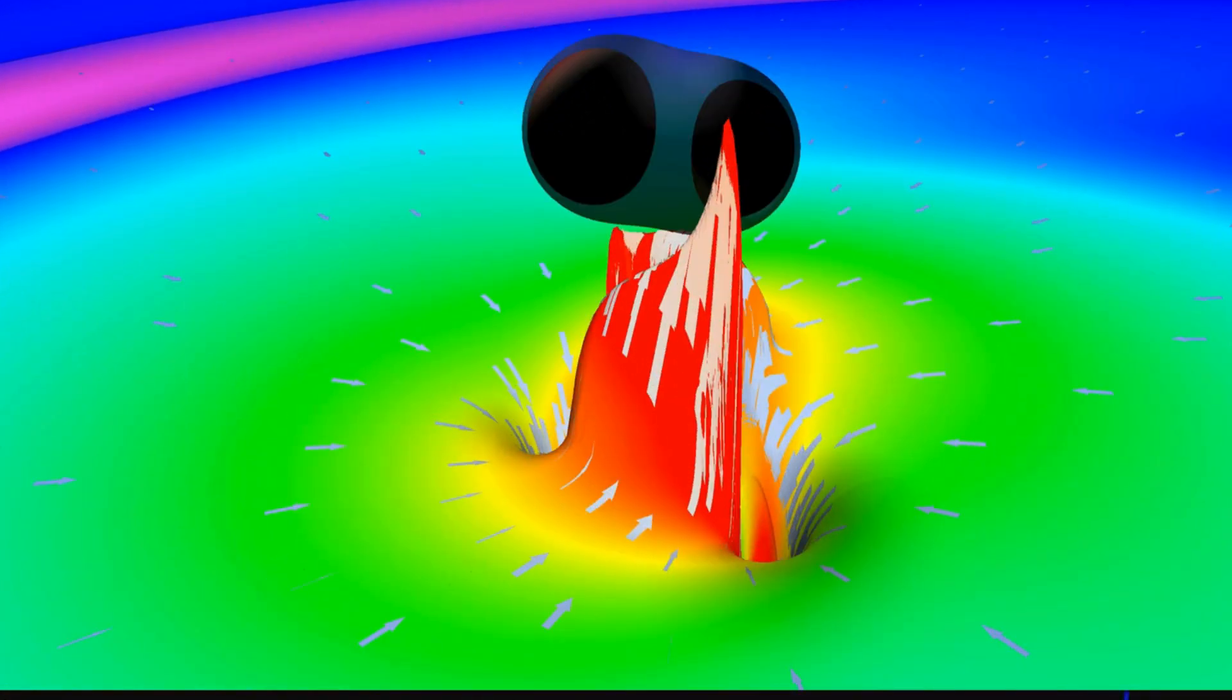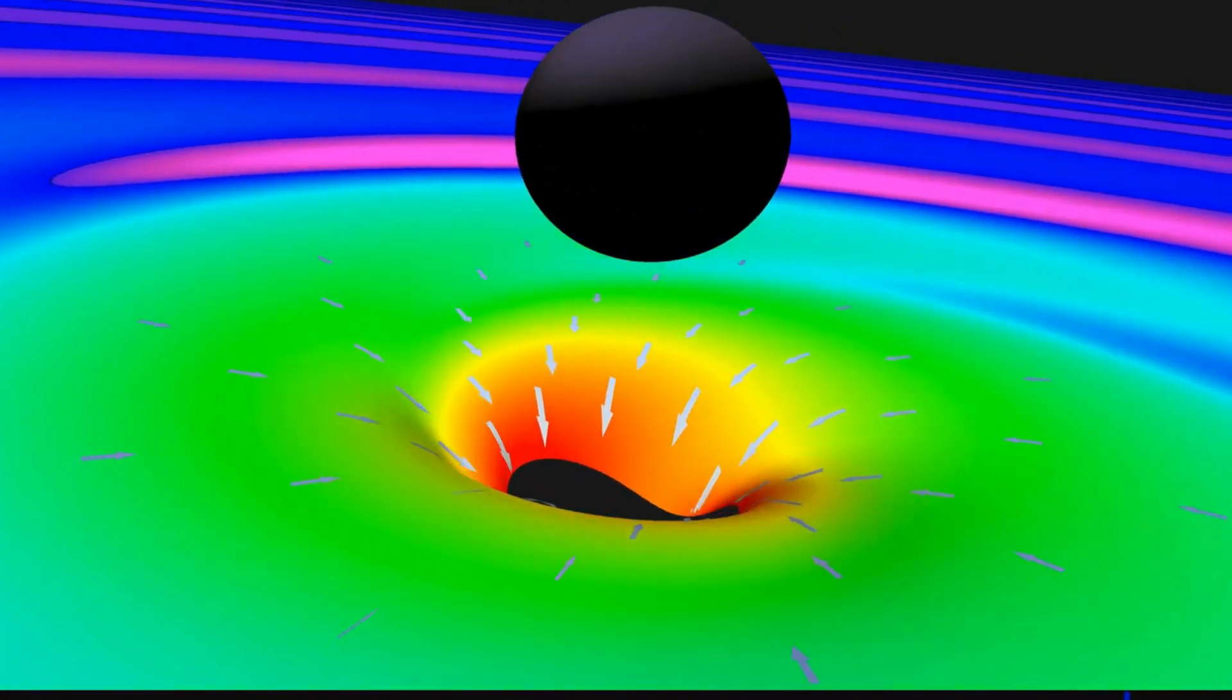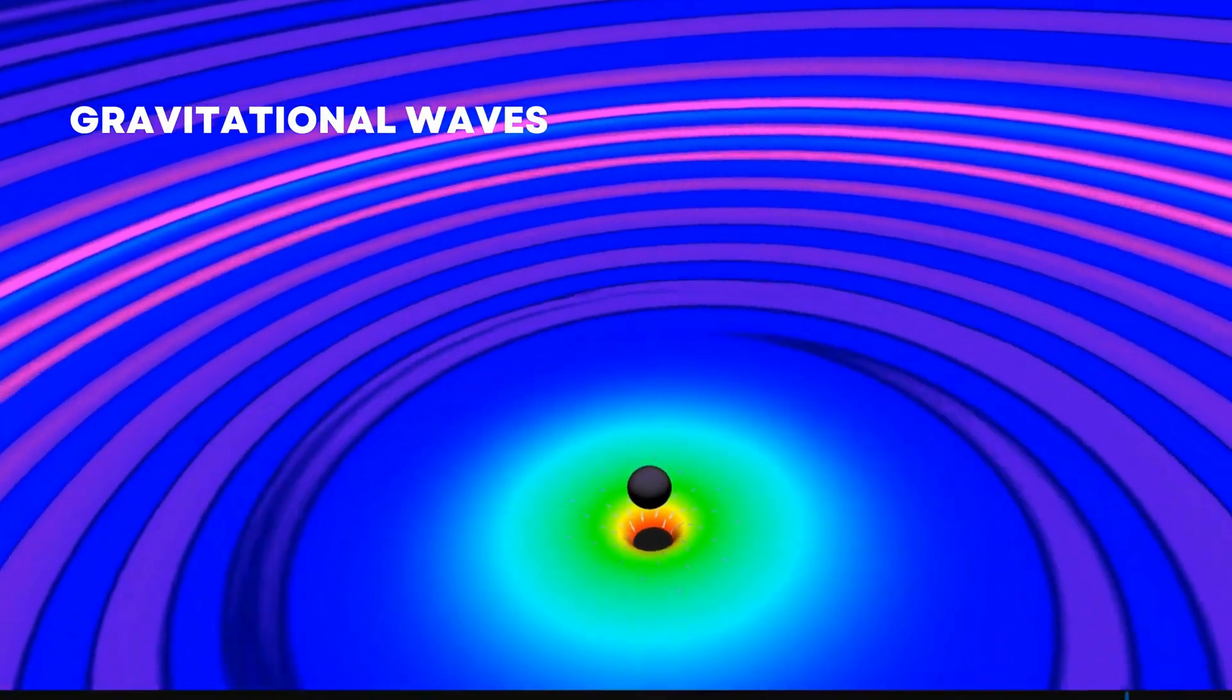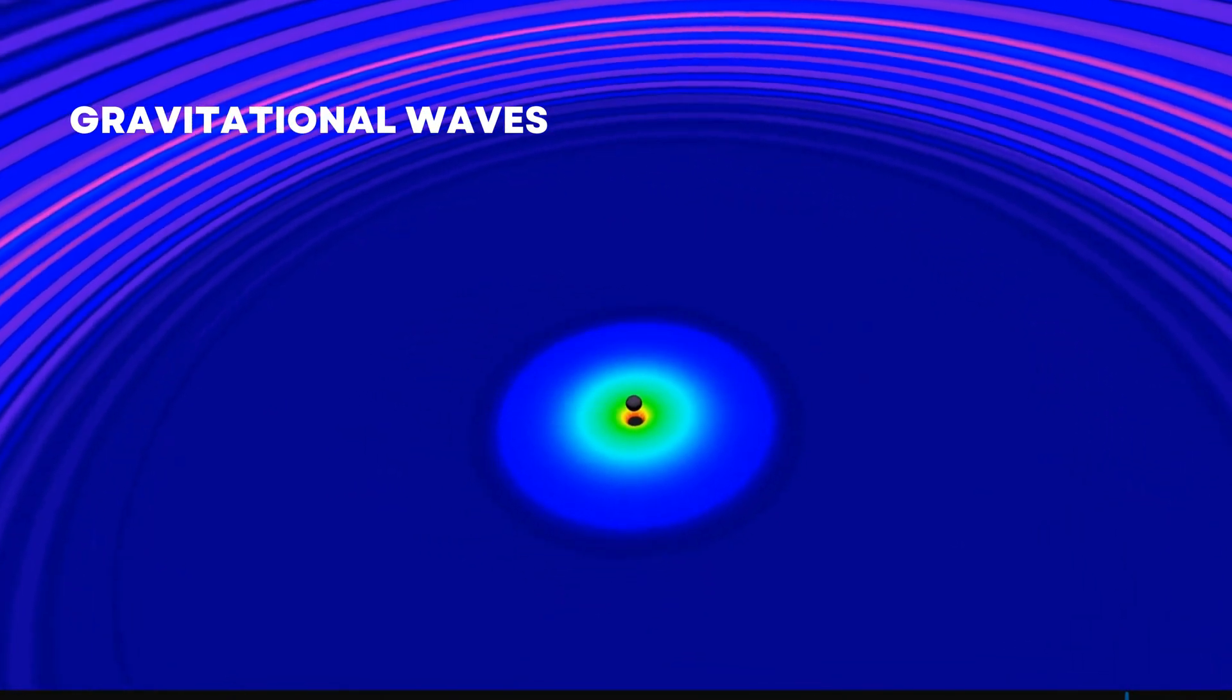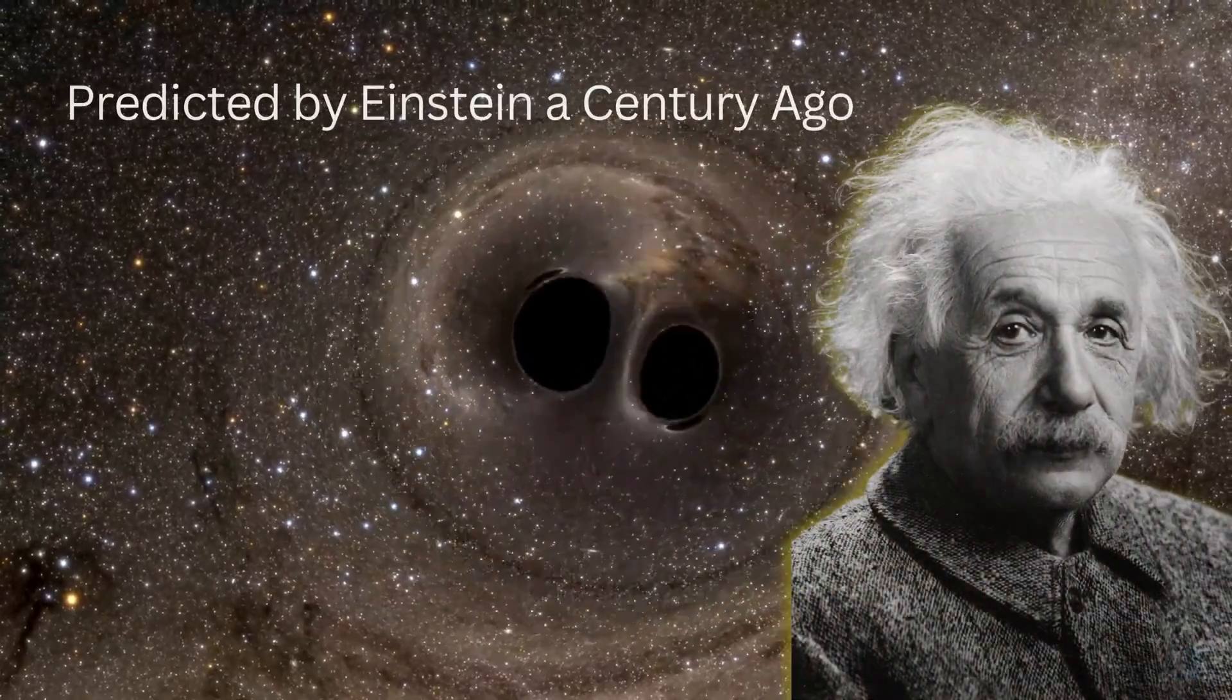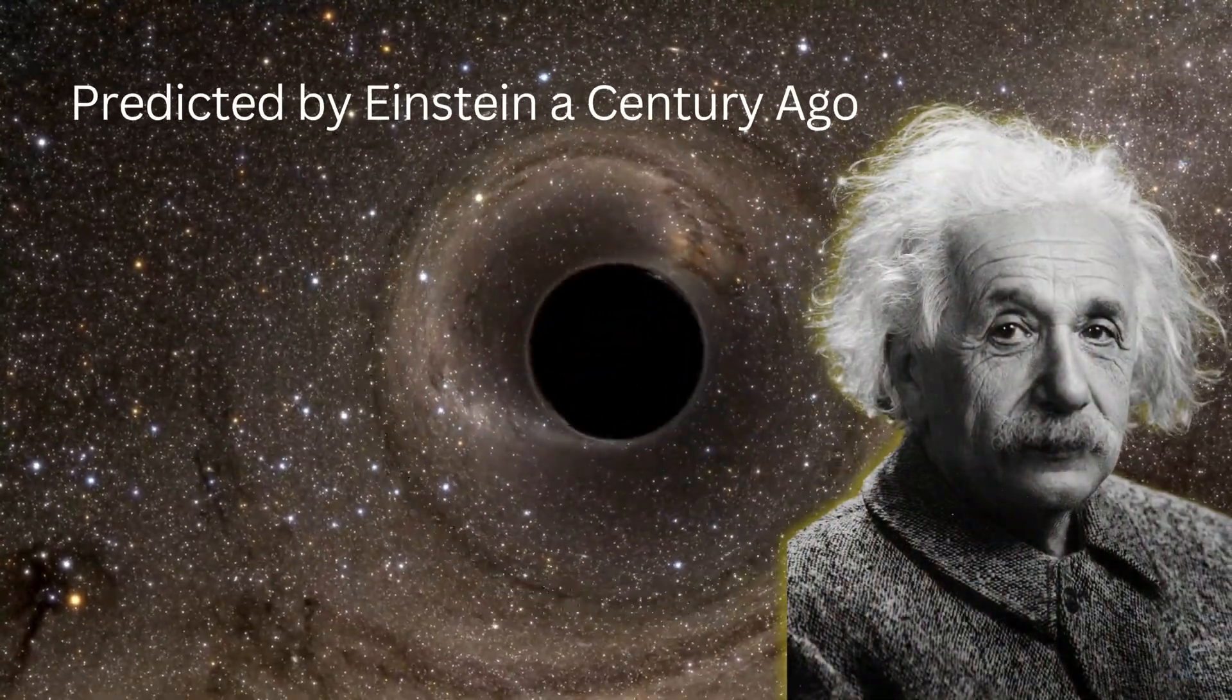Interestingly, when supermassive black holes merge, they create ripples in the fabric of space-time, known as gravitational waves. These waves were first detected by LIGO in 2015, confirming Einstein's predictions from a century ago.